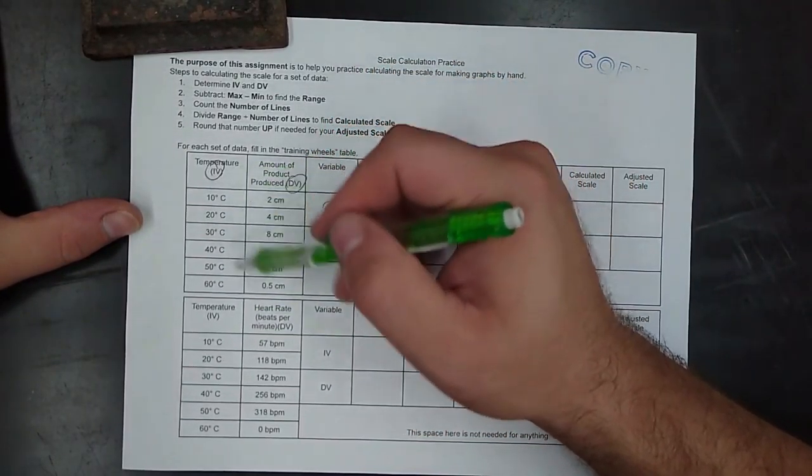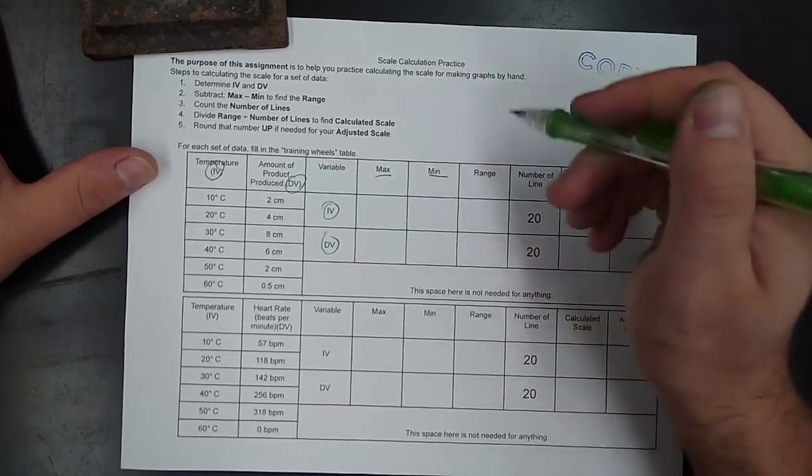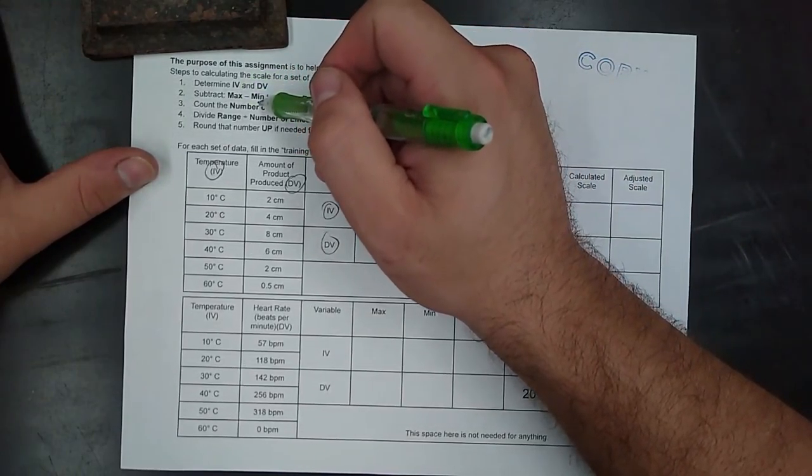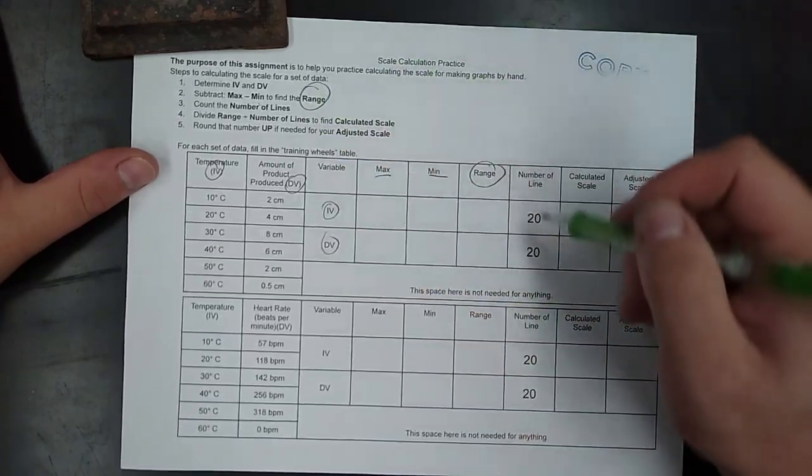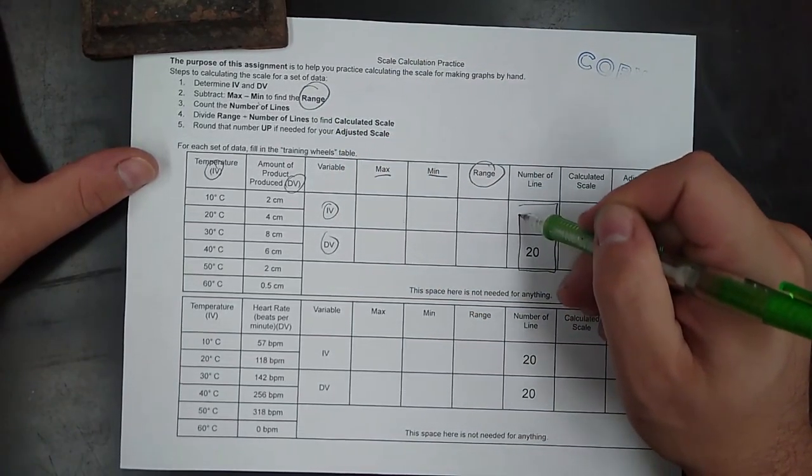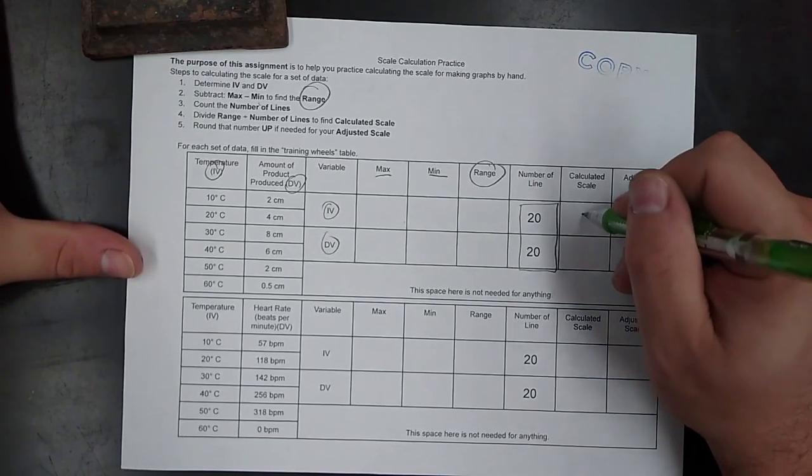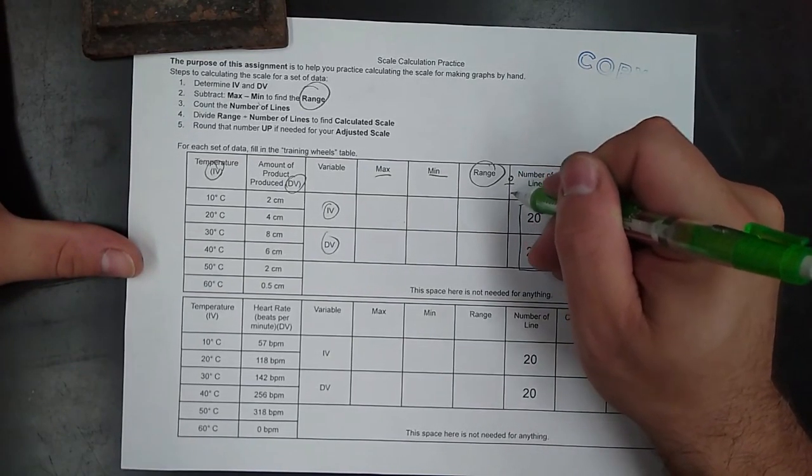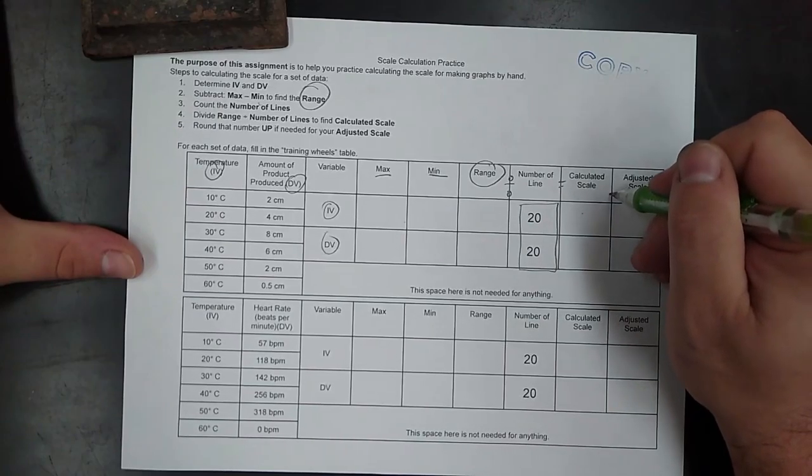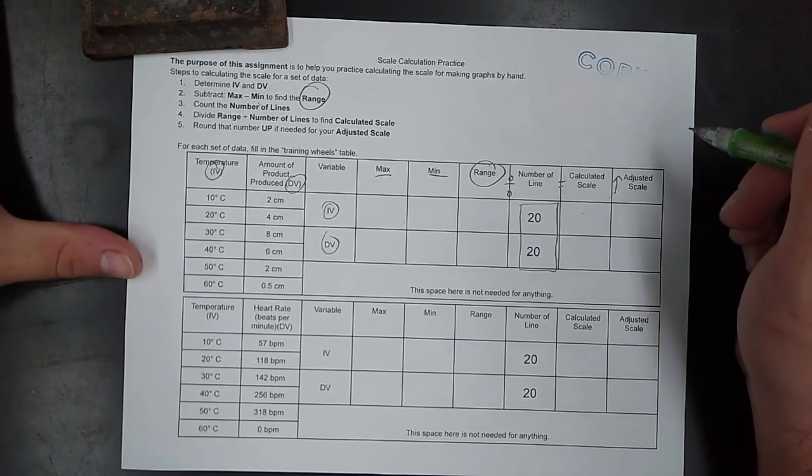Basically, for each one, you just find your maximum, find your minimum. You're going to subtract them to find your range. The number of lines on the graph that I always give you is 20, so that's filled in for you. Calculate your scale—that's range divided by number of lines—and then round that number up to get your adjusted scale.